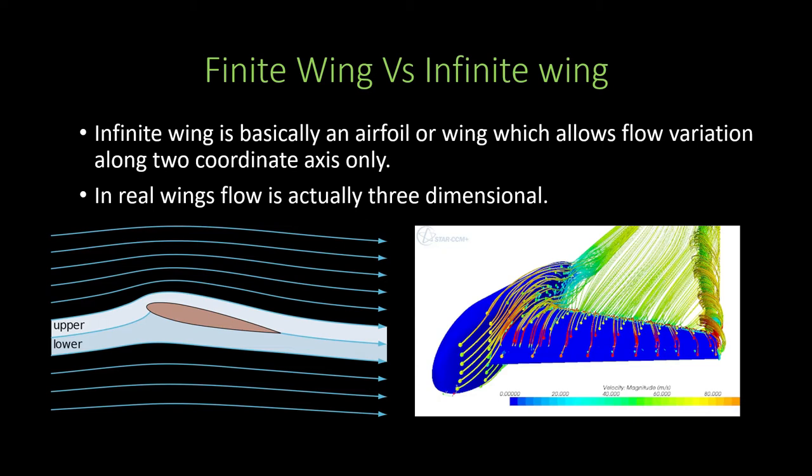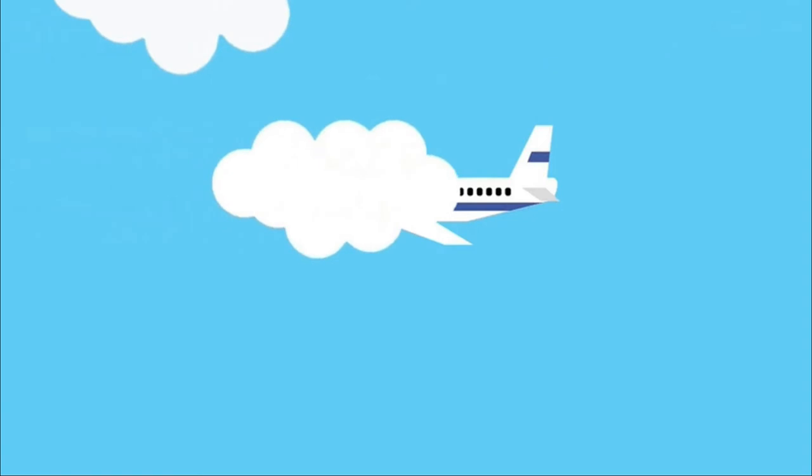In our previous video, we studied the drags on an infinite wing. There were three types: form drag, skin friction drag, and wave drag. For a finite wing, in addition to all three of these, there is one more drag which acts — known as induced drag. Let us try to understand what induced drag is.